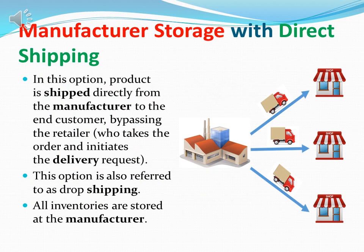The first option is manufacturer storage with direct shipping, where inventory stays with the manufacturer and ships directly to the end consumer. In this option, products ship directly from the manufacturer to the end consumer, bypassing the retailer, who only takes the order and initiates the delivery request. This is also referred to as dropshipping. All inventories are stored at the manufacturer, and it is increasingly common in e-commerce.